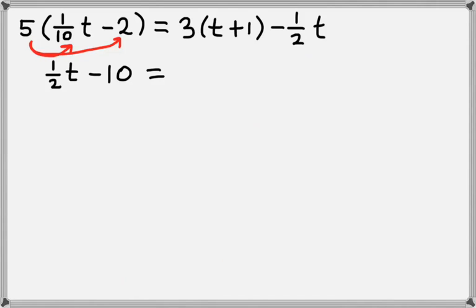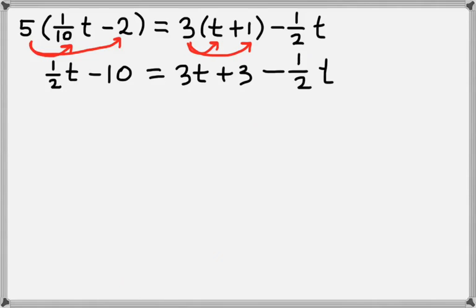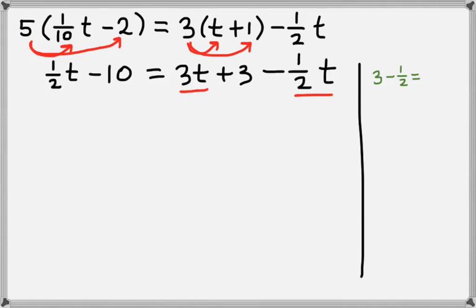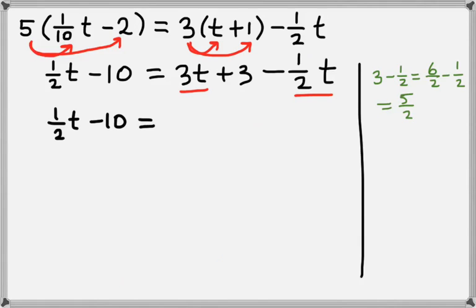On the right hand side we have 3 times t, which is 3t, plus 3 times 1, which is 3, and we still have that minus 1 half t. Now let's combine the like terms on the right hand side. We have 3t minus 1 half t, so 3 minus 1 half is the same as 6 halves minus 1 half, which is 5 halves. So we rewrite the right hand side as 5 halves t plus 3.